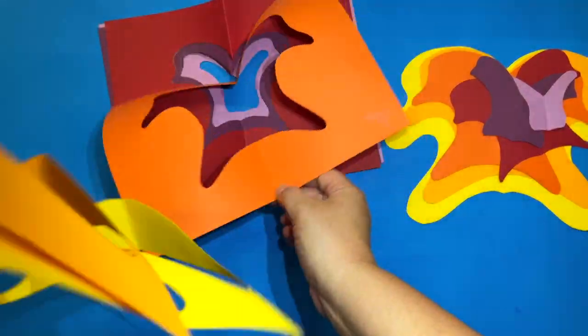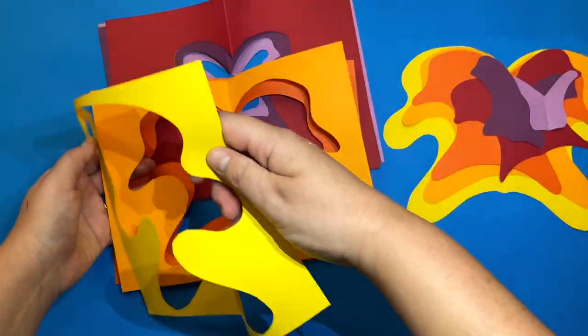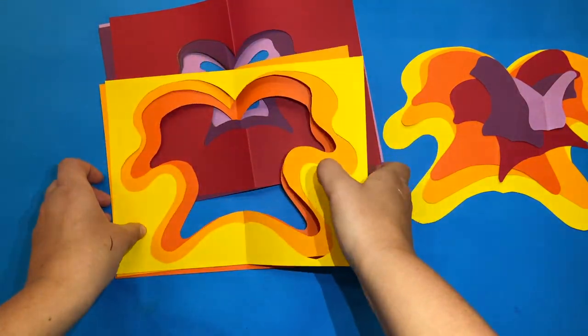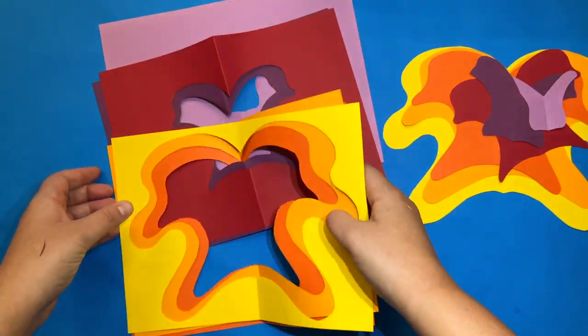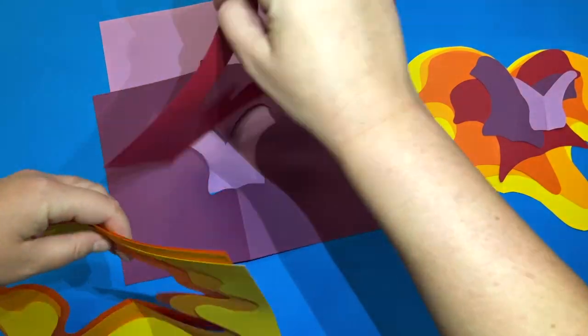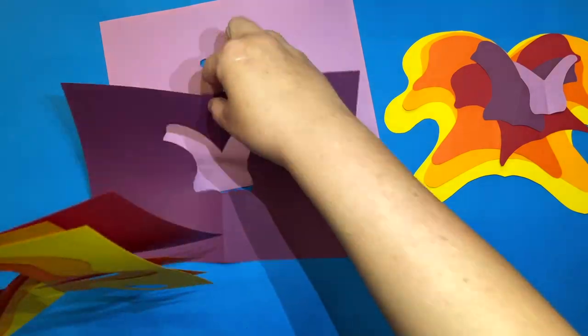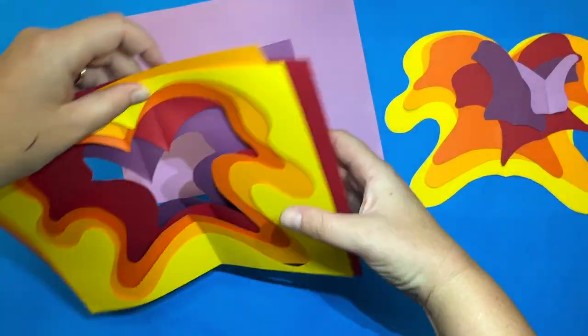So flip them and we want to make sure that the ones with the biggest shape goes on top for our negative artwork and the ones with the biggest shape goes on the bottom for our positive artwork.